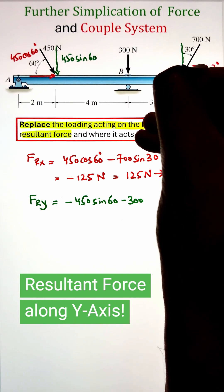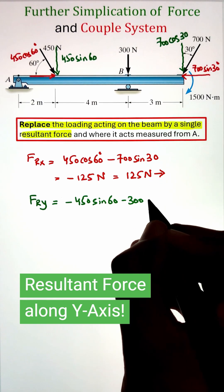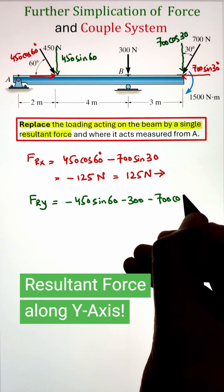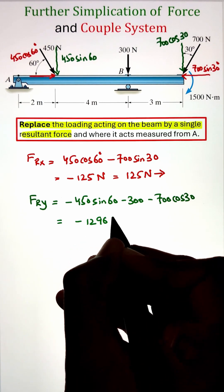Then I have 300 newton that is acting vertically downward, whereas our 700 newton if we take the cos 30 function will project it downward. Adding them all together gives us our y component as 1296 newton.